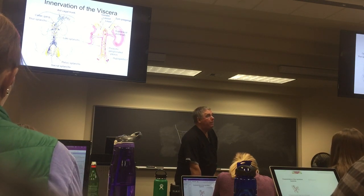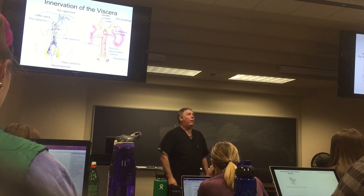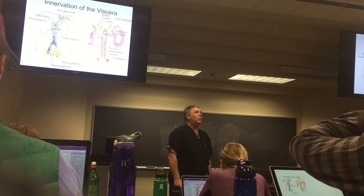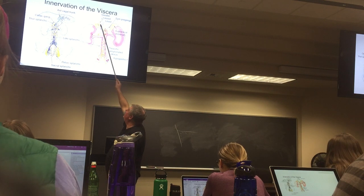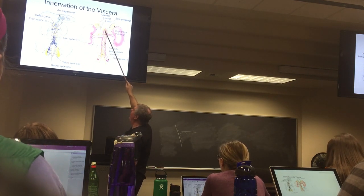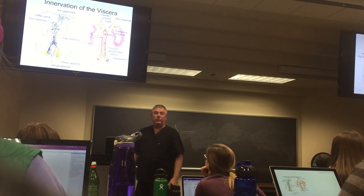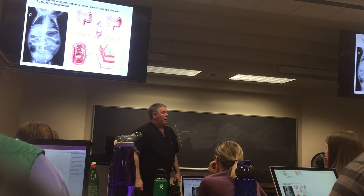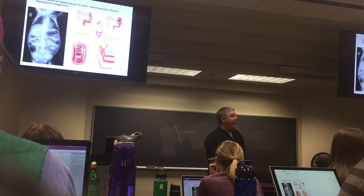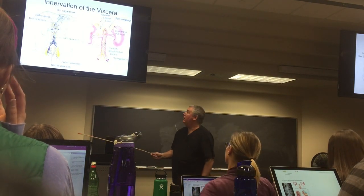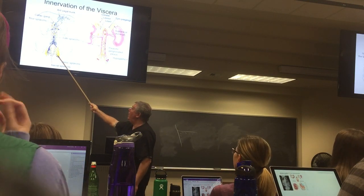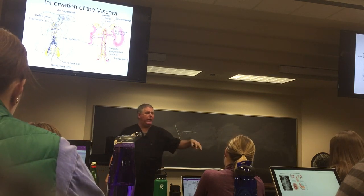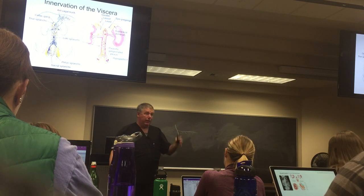Innervation of the viscera — the greater and lesser splanchnics are diving into the preaortic ganglia, and from there they just catch a ride on the blood vessel in terms of the sympathetic. The vagus and S2, S3, S4 find their post-ganglionics at, on, in, or within an organ. In terms of the GI tract, it's within.